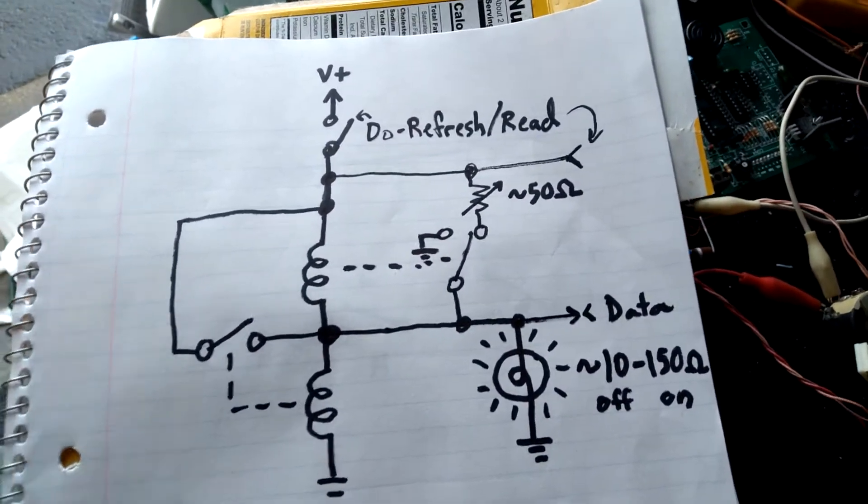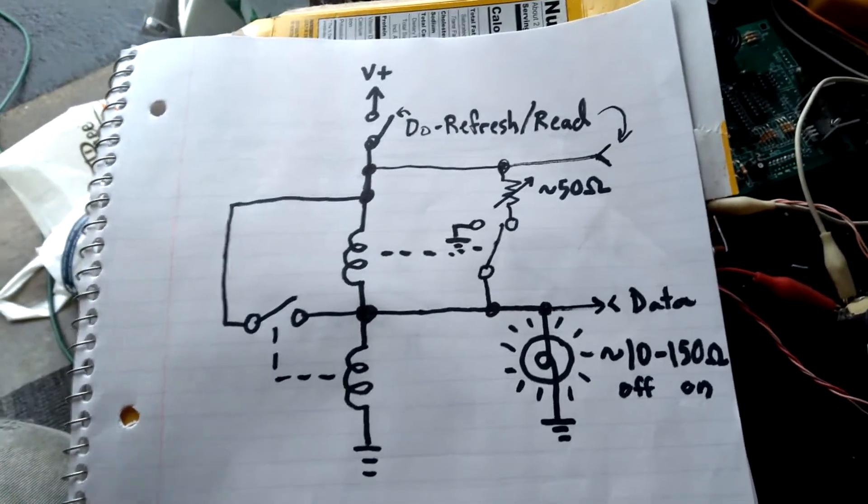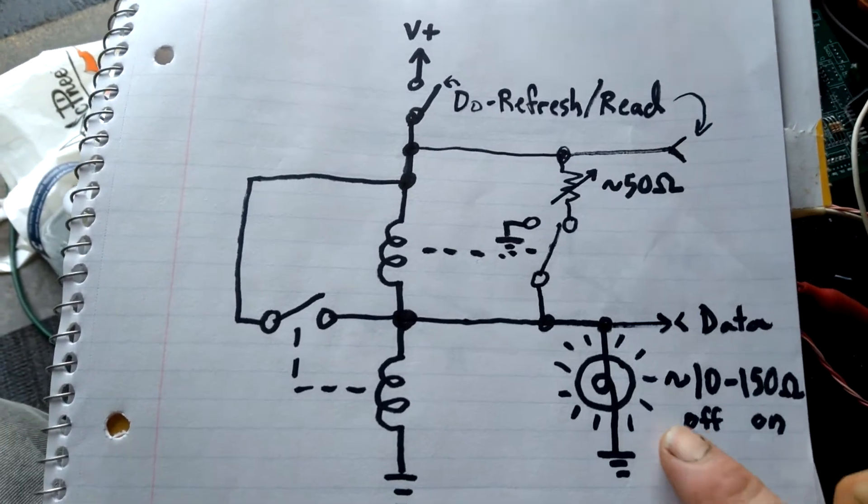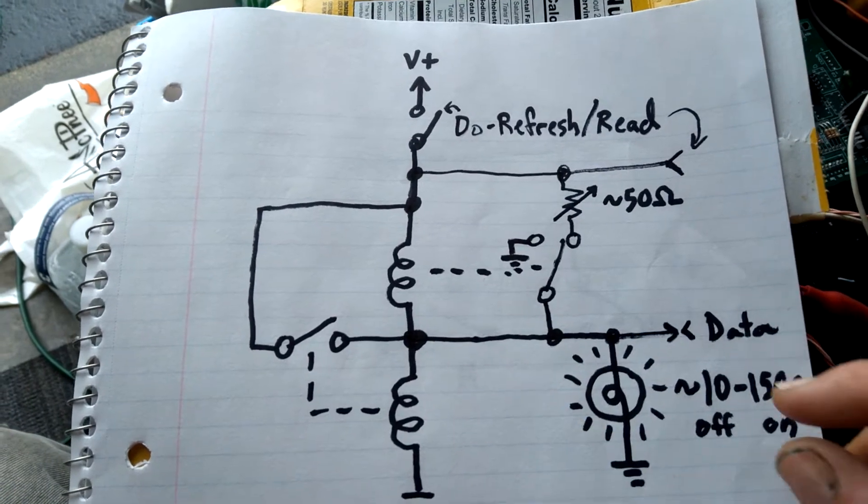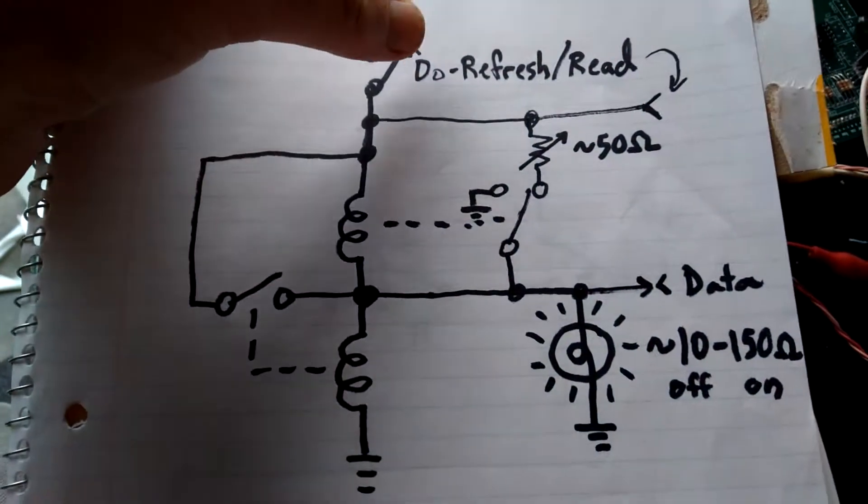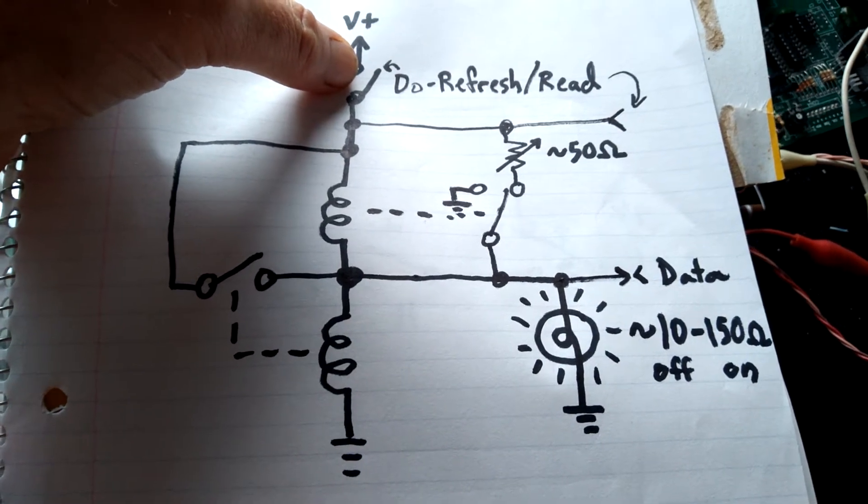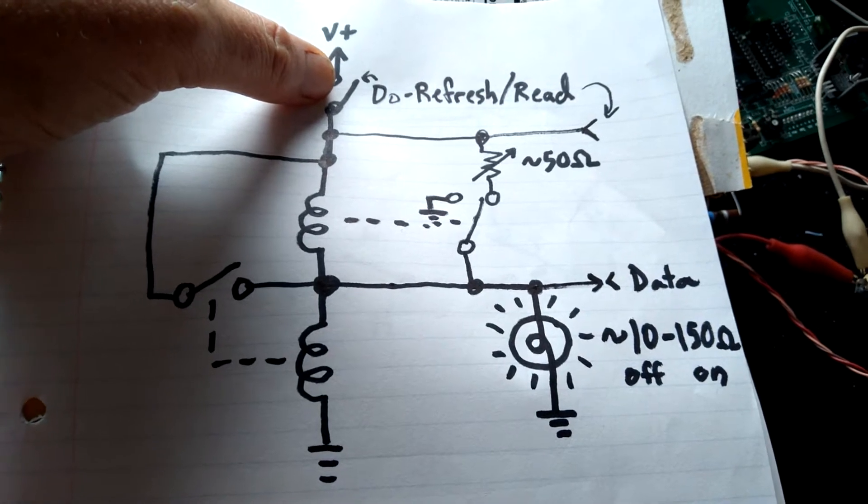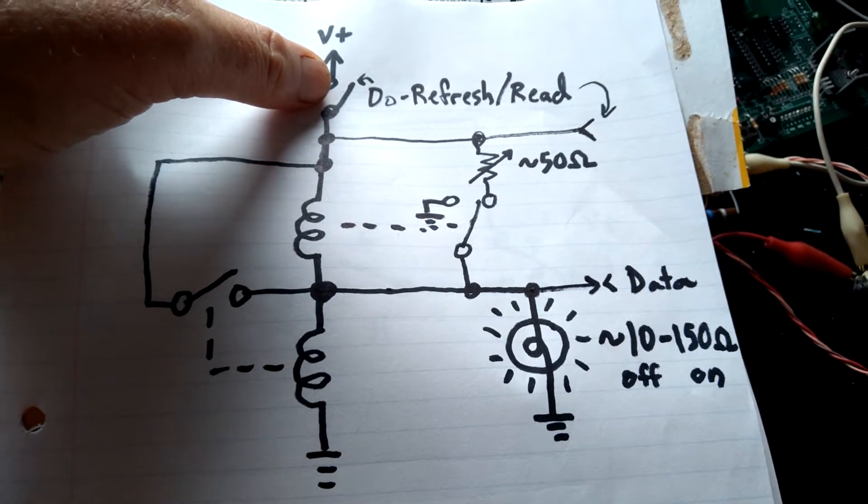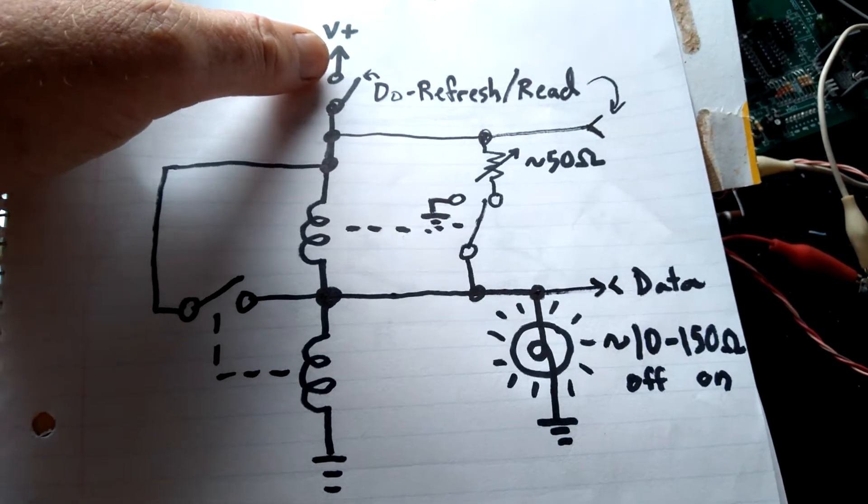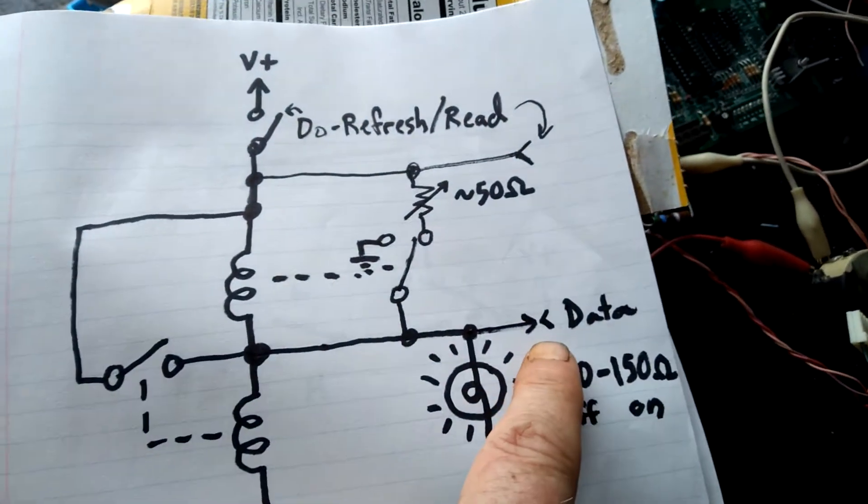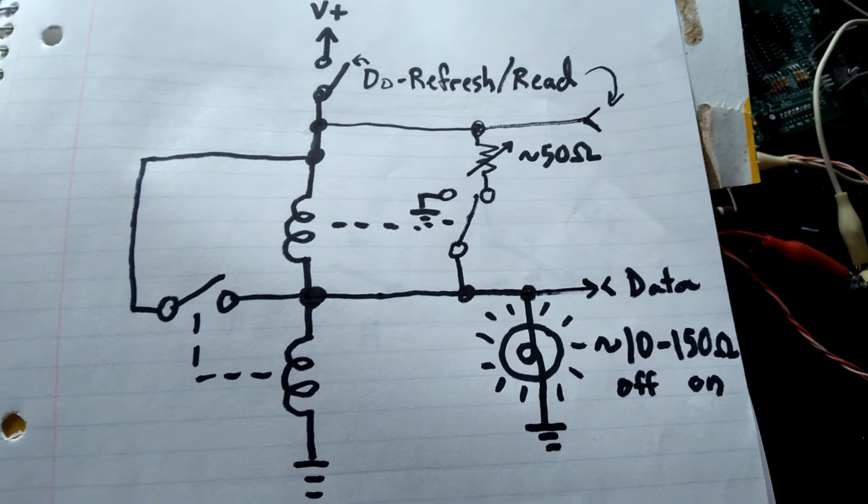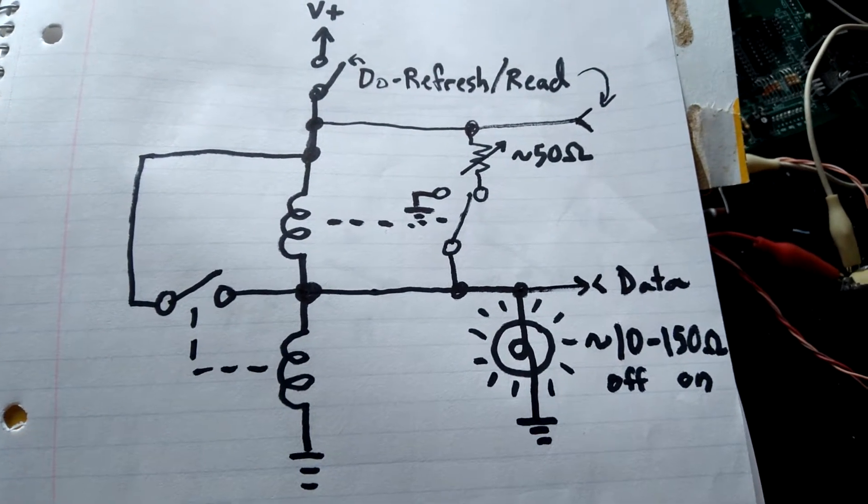So we have this circuit here and what happens is when the light bulb is already written with a value, high or low, then you can refresh it. You can take the power off of it and then you can push this button and it will automatically determine whether it was on or off previously and it will either keep heating it up if it was on or it will make sure not to heat it up if it was off. And the output here when you're doing a read or refresh will be either high or low based on whatever it was, whether it was lit or not lit.